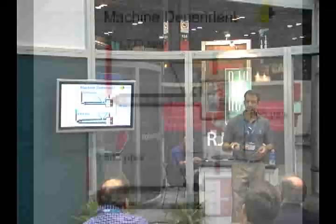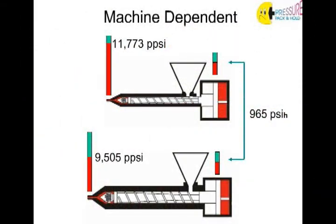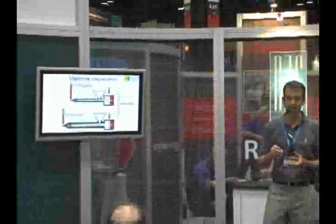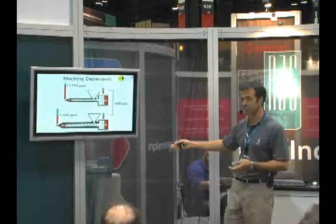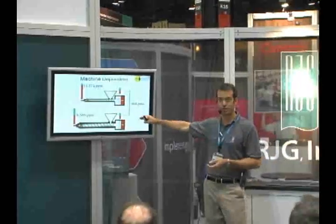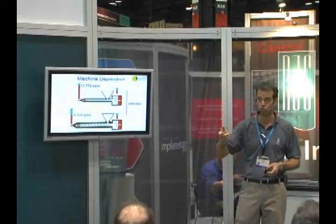If we take a setup sheet from machine A that has a 965 PSI hold pressure setting — where our process is running today — machine A is going to generate 9,505 PPSI, plastic pressure per square inch, when that material is leaving the tip of the screw. We have a pump pressure setting on our setup sheet of 965; that's the value we select on our controller.